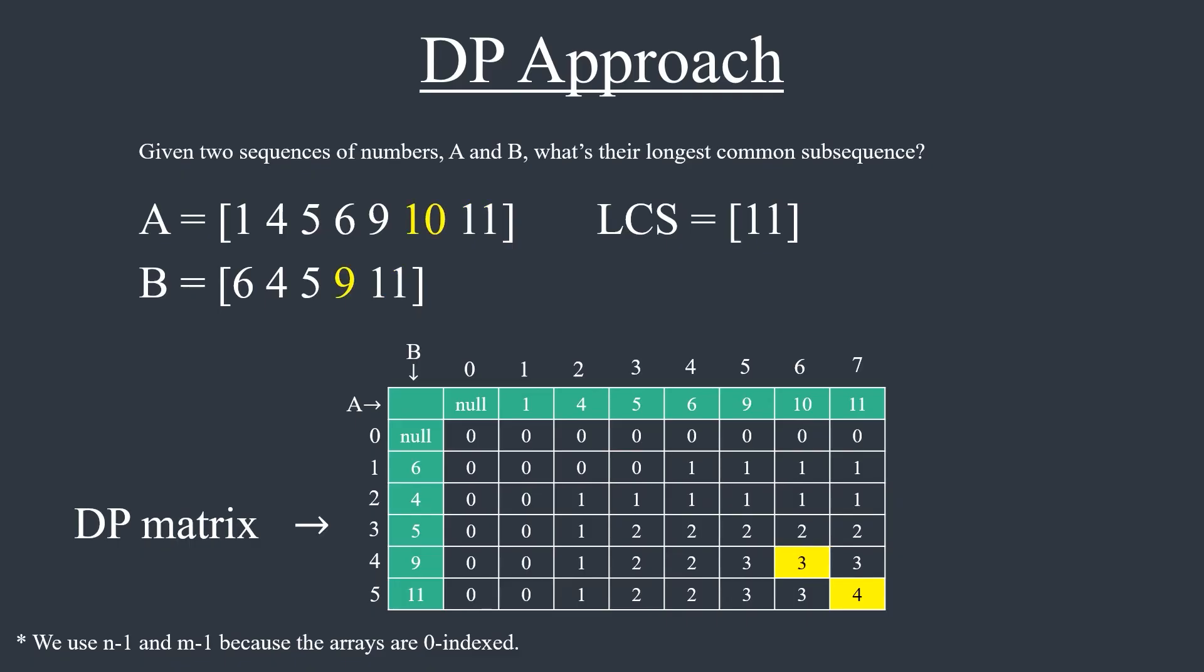9 and 10 are different. We know that the solution is 3 for this subproblem. So all we need to do is follow the path that resulted in 3. That can only happen if we keep 9 and drop 10. Let's do that. Notice that some examples may have multiple solutions in which case dropping either of the elements results in the optimal solution. Let's keep going.